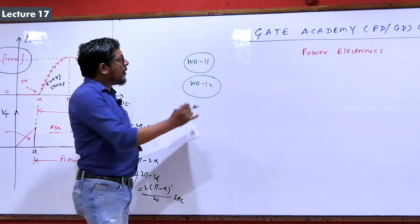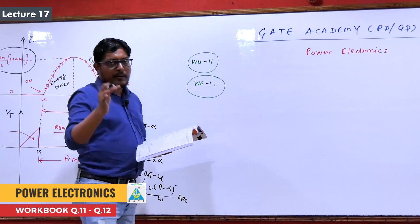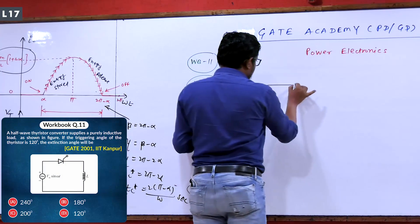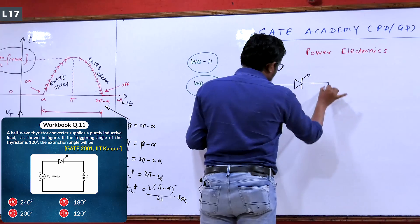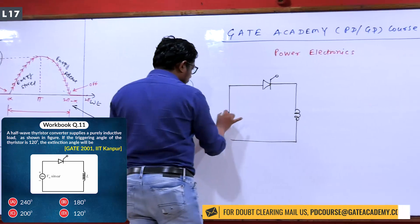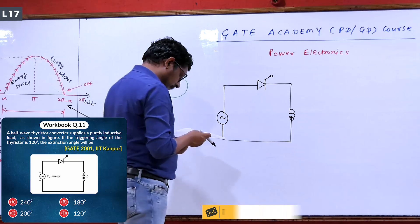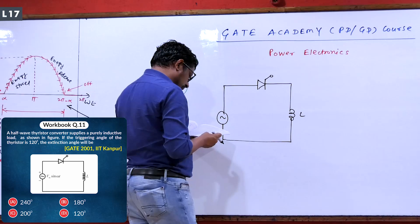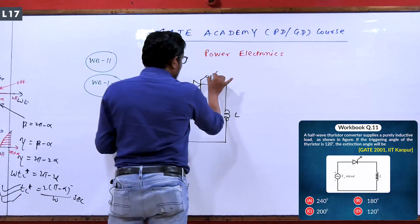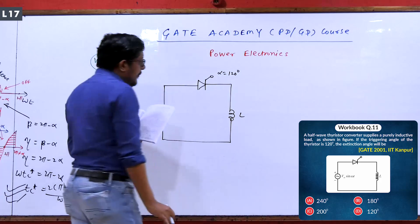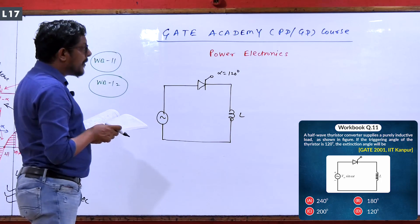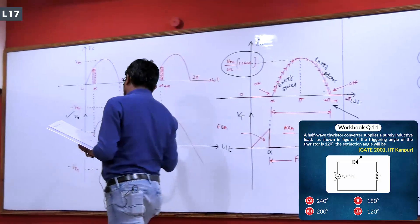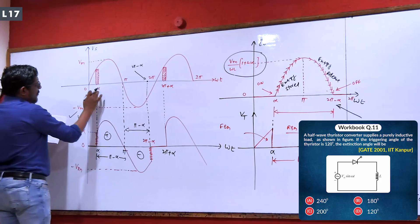Hello everyone. Now look at question 11 and question 12. I have seen your workbook — question 11 is from GATE 2001, made with a thyristor and put in pure inductance. The question states that a half-wave thyristor converter supplies a pure inductive load as shown in the figure. If the triggering angle alpha is 120 degrees, the extinction angle is asked as an objective question.